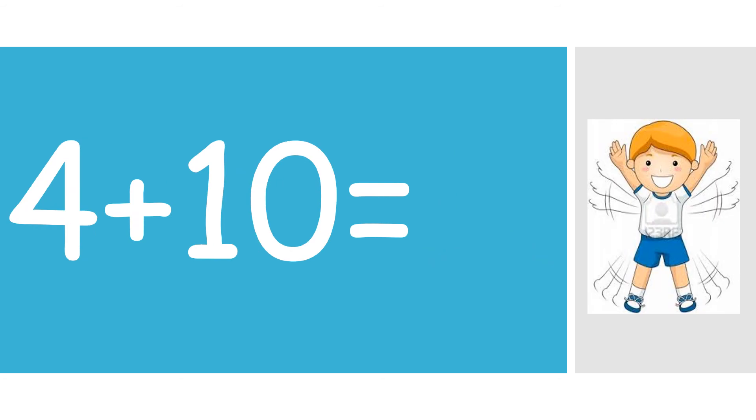4 plus 10. Start with your bigger number and add on 4. That's right, 14. Do 14 jumping jacks. I bet you feel your heart rate getting higher.